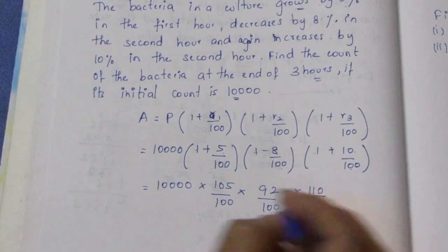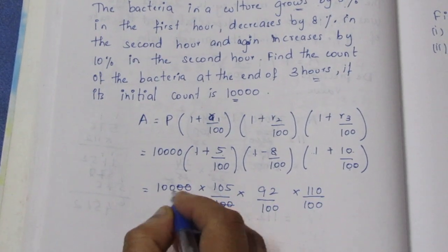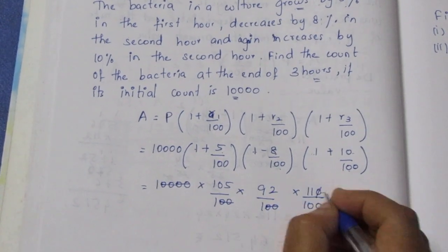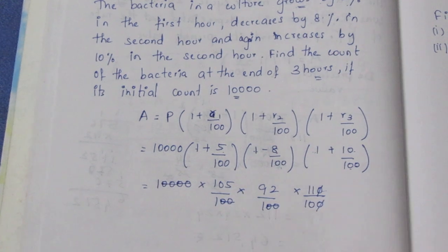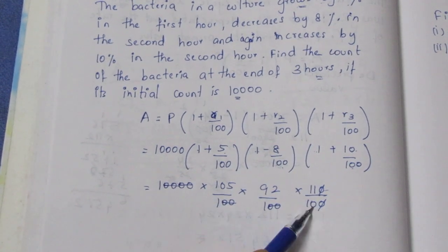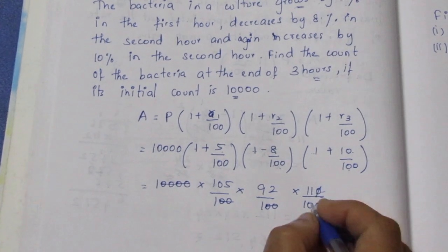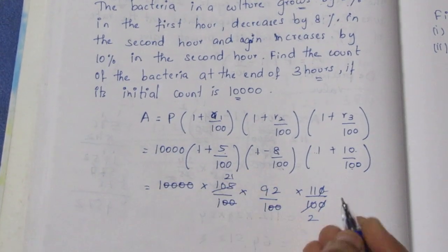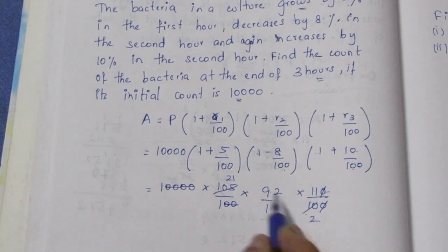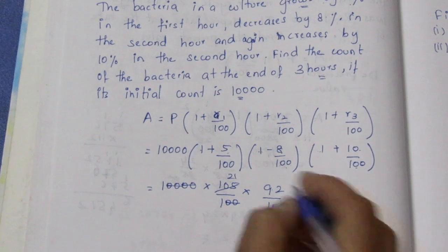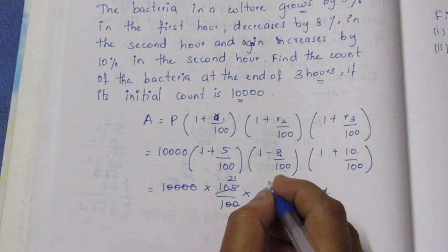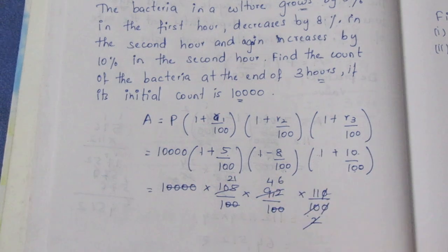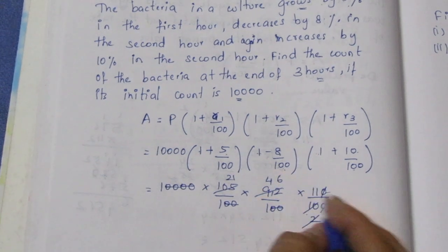Now we simplify by cancelling common factors. We cancel 20s, then 10s, then 5 tables with 5 tables — 5 twos are 10, 5 twos are 10, 5 ones are 5. Then we cancel 2 tables with 2 tables — 2 ones, 2 fours are 8 with remainder 1, 2 sixes are 12.